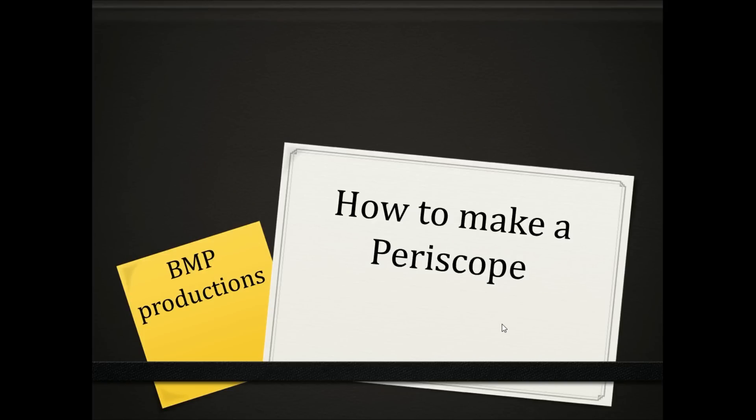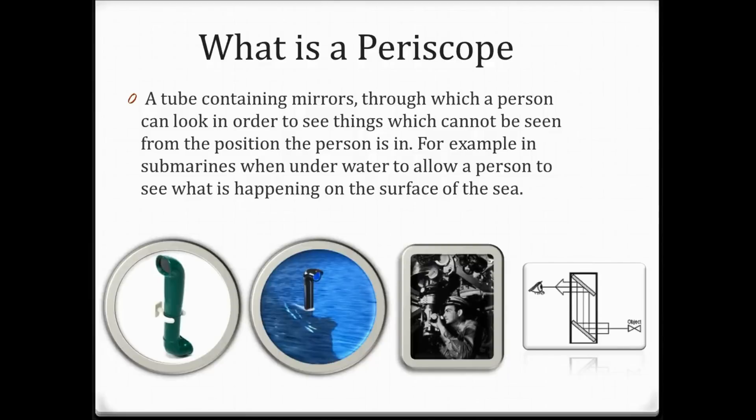Hey, hi everyone. This video is about how to make a periscope. This slide shows what is a periscope. It is a tube containing mirrors through which a person can look in order to see things which cannot be seen from the position the person is in. For example, in submarines when underwater, to allow a person to see what is happening on the surface of the sea.